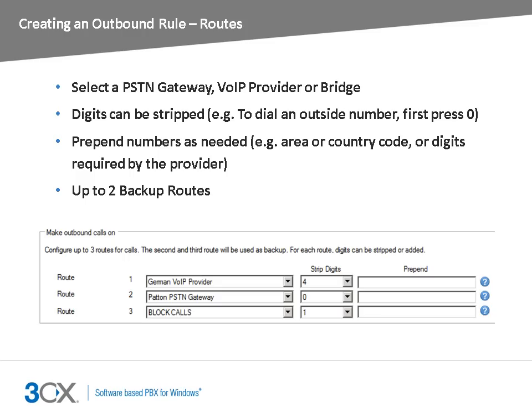After you have configured the matching criteria, you need to select the route for this outbound rule. You can select the route calls to a pre-configured PSTN gateway, VoIP provider or bridge. You can select the stripped digits from the number. This is useful when the rule is triggered by a prefix that the user must dial to get to an outside line, for example a zero. You can also select the prepend numbers if this is needed. This is useful when you want the country or area code to be prepended.